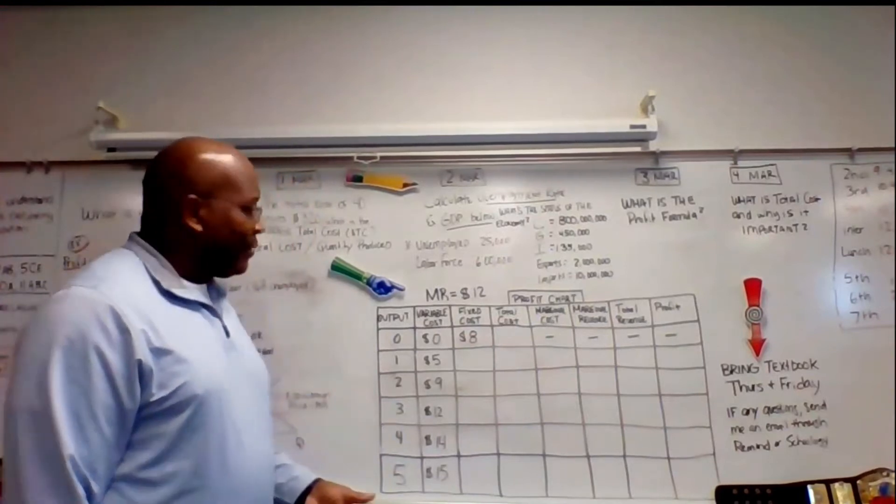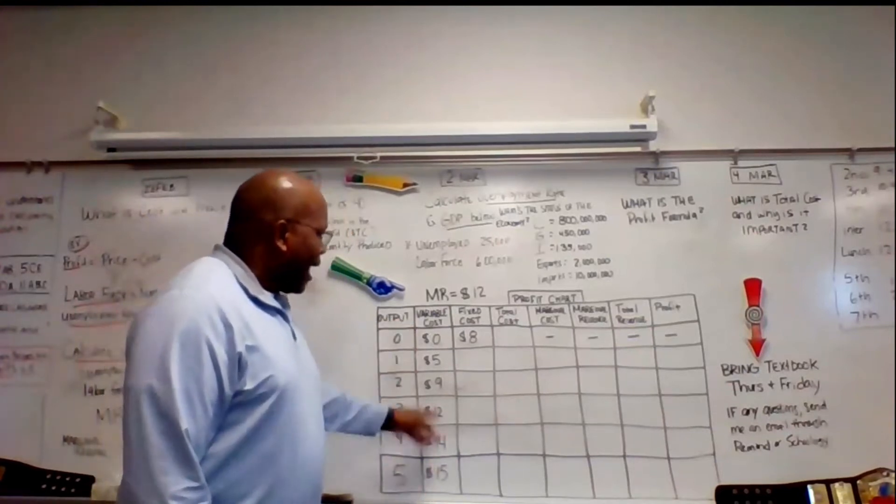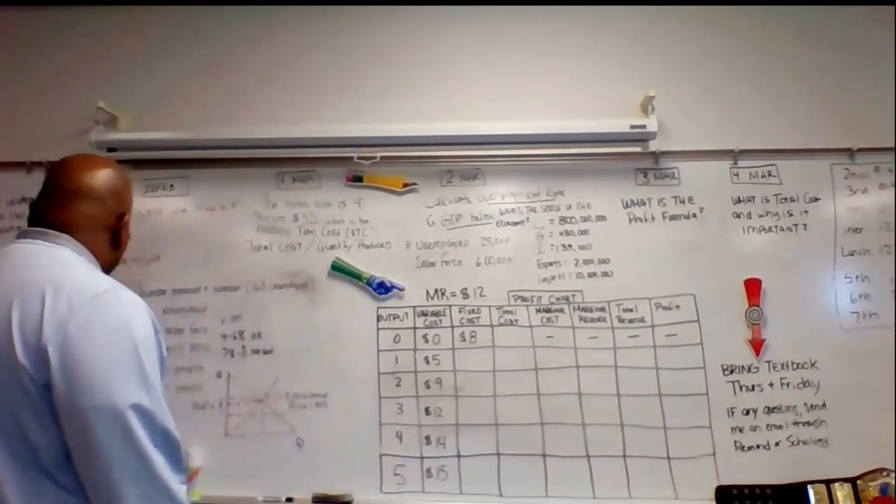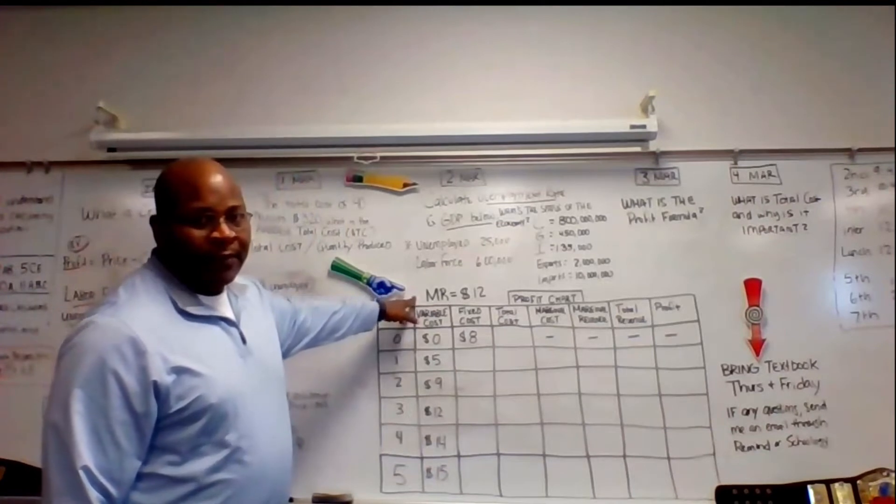Some things are going to be given. For instance, output will be given to you. Variable cost will be given to you. And the MR will be given to you. We know MR as the equilibrium price tag. That's the marginal revenue or equilibrium price tag.